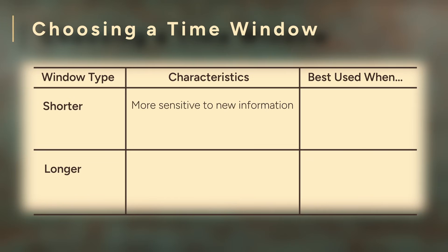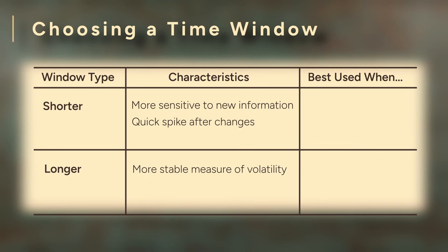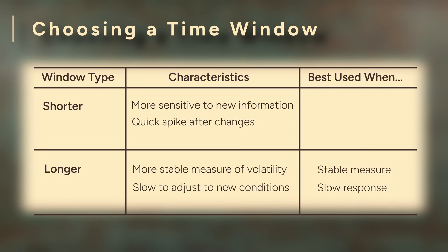So why choose a certain window? The shorter windows are more sensitive to new information. If the market suddenly gets jumpy, a monthly volatility measure will spike almost immediately. By comparison, the longer windows are less influenced by daily changes — they smooth out those jumps, but that also means they are slow to react when conditions shift. Longer windows smooth out noise but react slowly. Shorter windows respond faster, but come with more day-to-day variability. In the end, it's a matter of matching your volatility measure to the speed of your decision making.